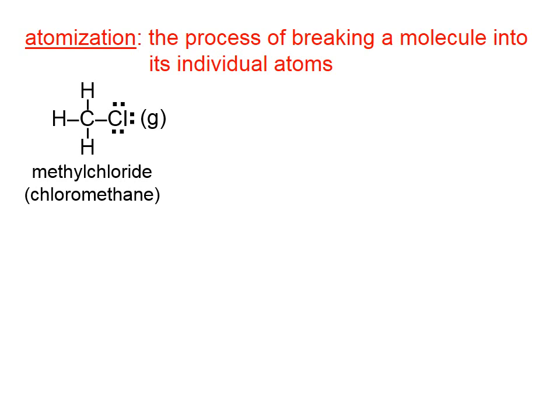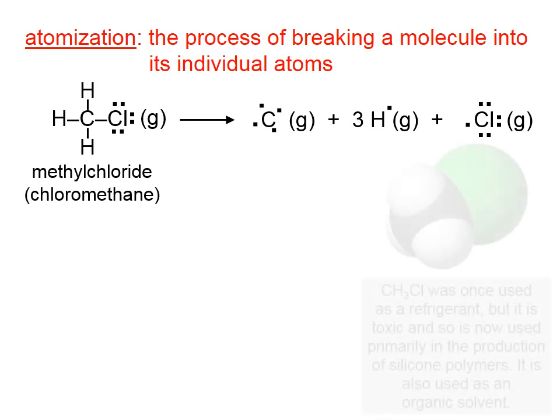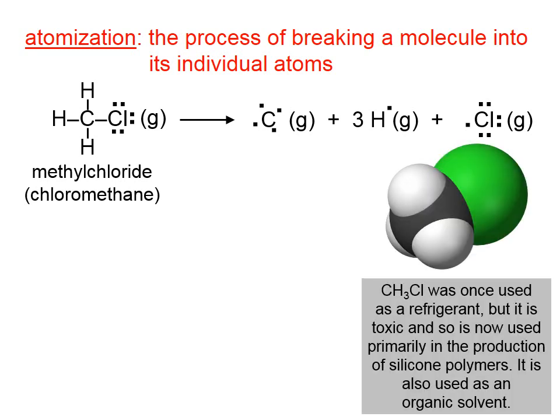You can think of this methyl chloride molecule as a Lego structure that has five Legos and we need to break that into pieces, so we have to rip each Lego off. When we're done, we will have an isolated carbon atom, three isolated hydrogen atoms, and an isolated chlorine atom. You can see a space-filling model of methyl chloride with the chlorine atom not surprisingly taking up much more space than the hydrogen atoms.